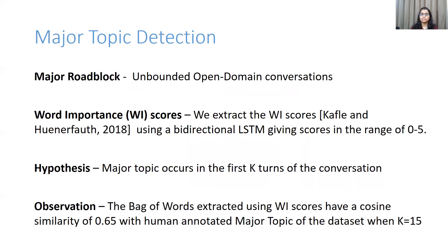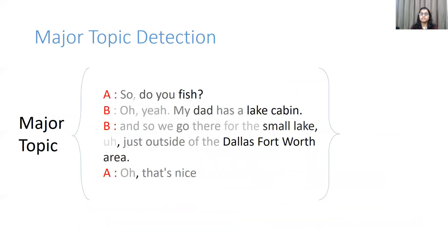For our case study, we started with the hypothesis that the major topic of conversation occurs in the first k turns. After sampling values of k ranging from 0 to 40, we see that the major topic is detected best when k is 50. This threshold gives us a cosine similarity score of 0.65 with a bag of words selected from 15 sentences and the human annotated major topic. Here we see a visual representation of the word importance scores detected for a snippet of major topic conversation. Words like fish, lake, cabin, and Dallas-Court are tagged with the highest word importance scores. These words are then taken as a bag of words, and heuristics are applied to select the major topic of conversation.